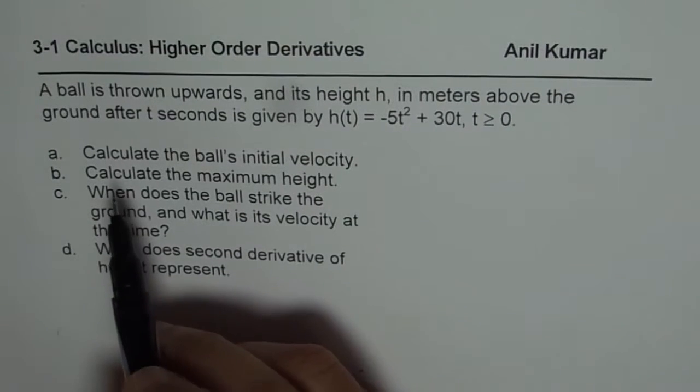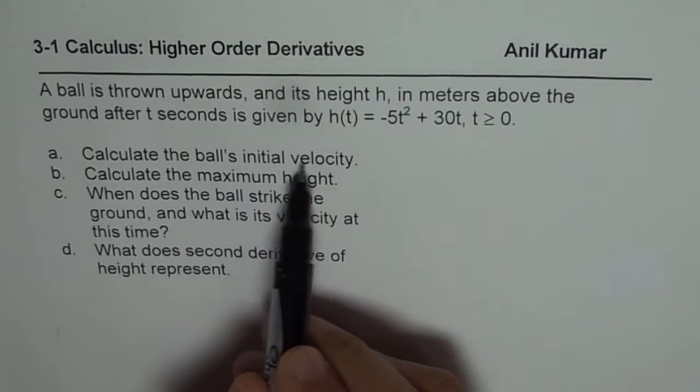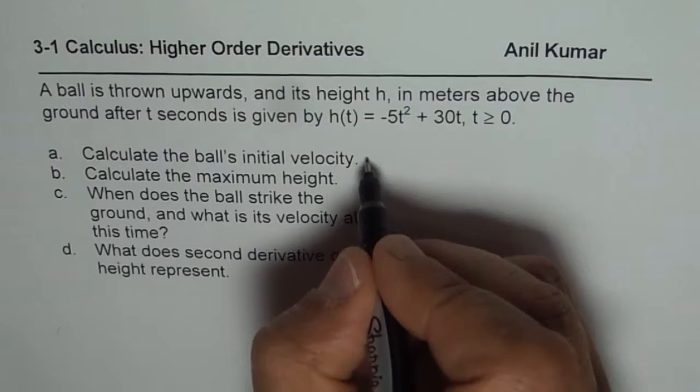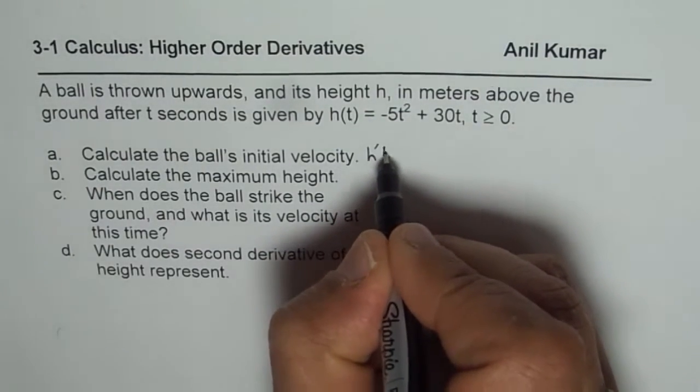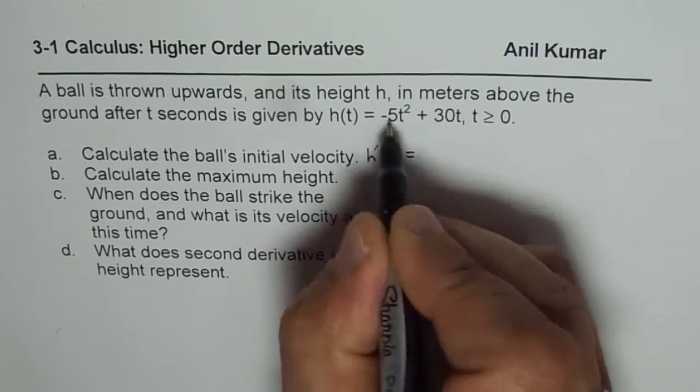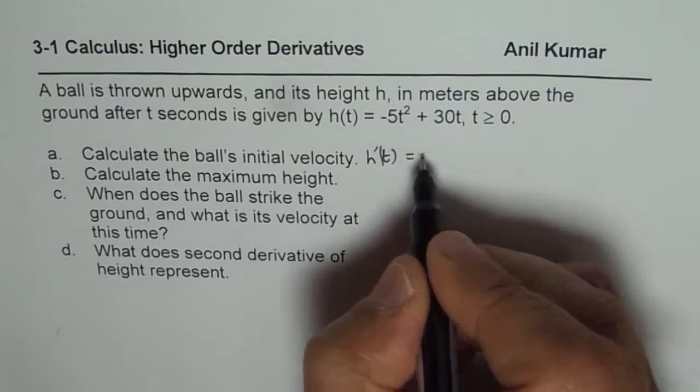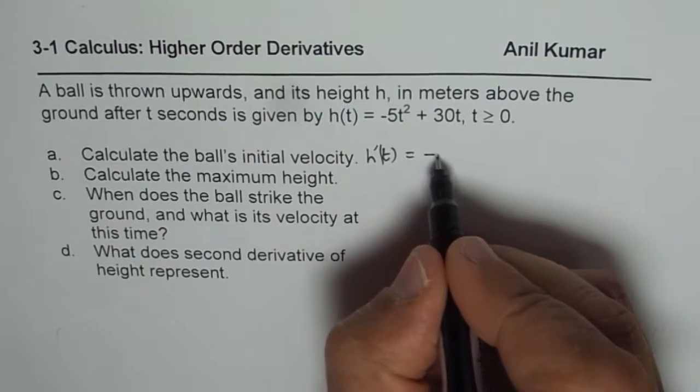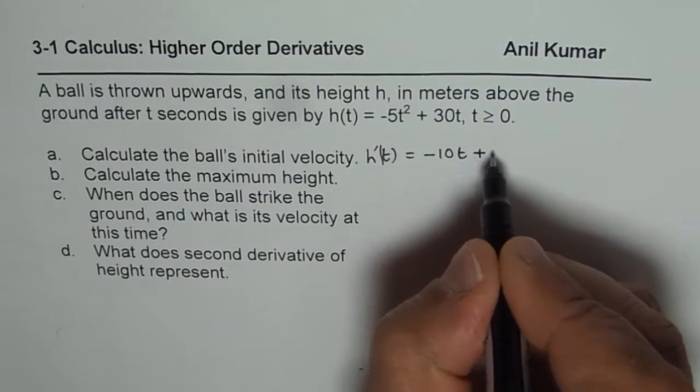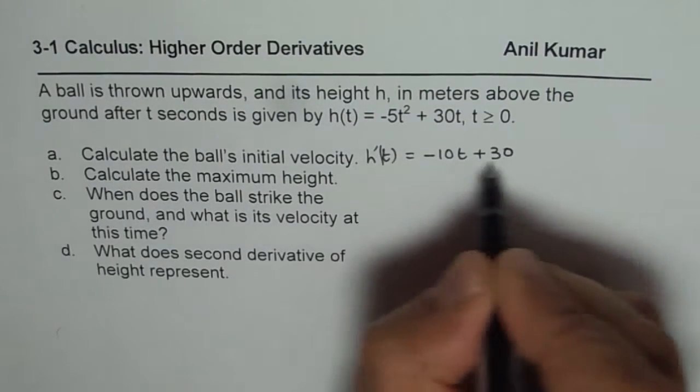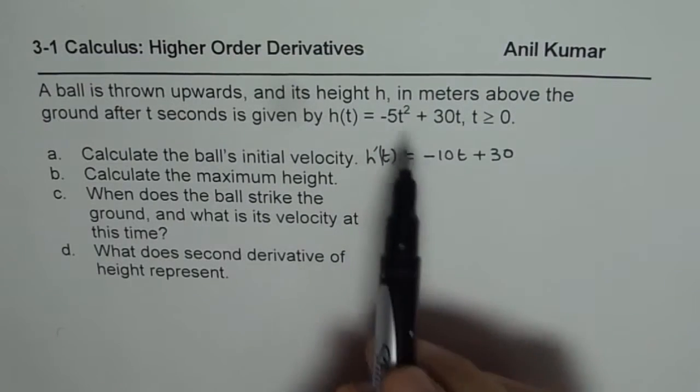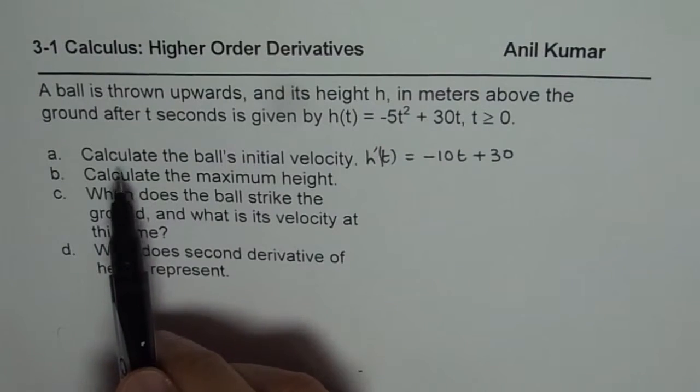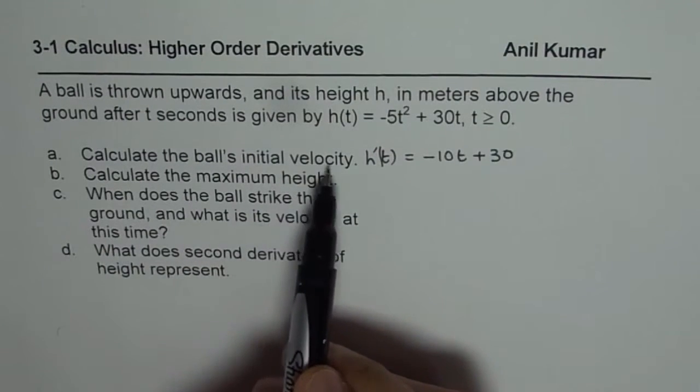Now the first part is calculate the ball's initial velocity. In this case it is rate of change of height. So h'(t) gives us the velocity. Let us find the derivative of the function which is -5t² + 30t. So the derivative will be -10t + 30 using the power rule. Now it says calculate the ball's initial velocity.